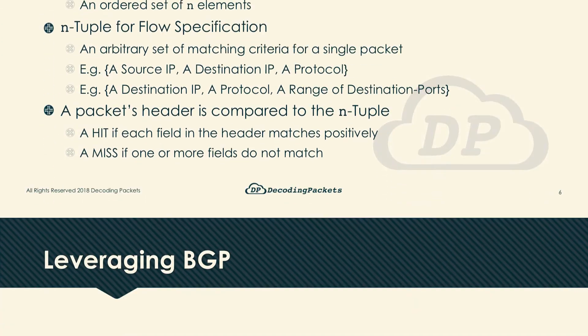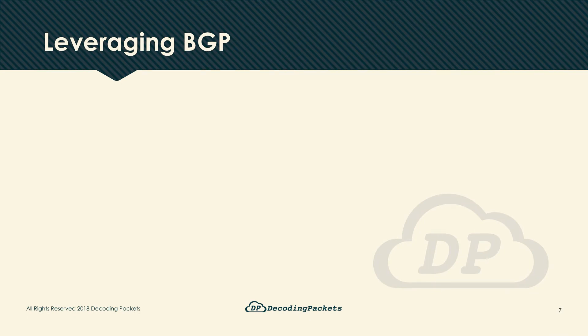A major idea in flow spec is to use BGP for the dissemination of the rules. This should not be a shocker — we need something, we look around, and we eventually look at BGP, only to realize we can already incorporate it within BGP without reinventing the wheel. How? Simply define new SAFIs.